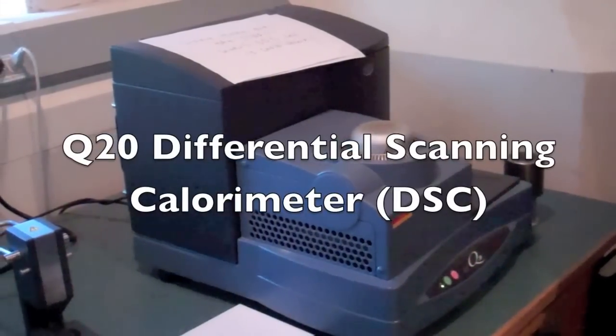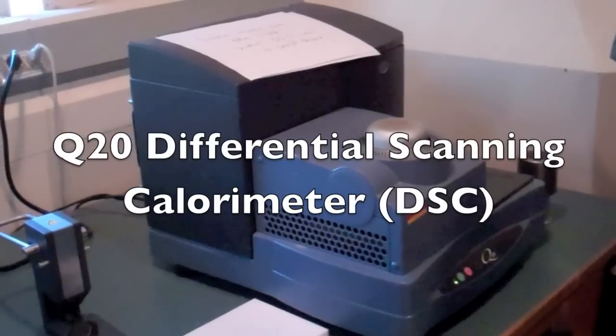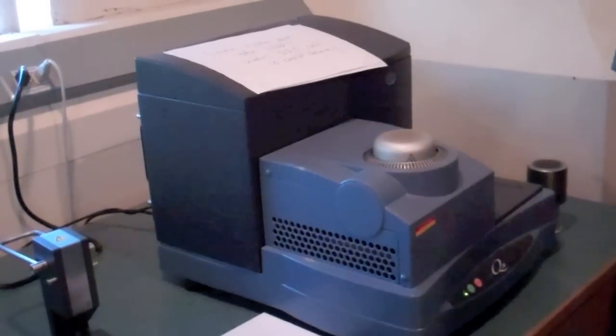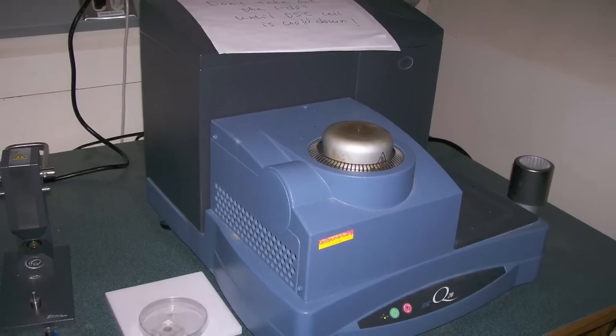The Q20 differential scanning calorimeter is used to measure the heat flow of a sample with respect to temperature. It helps to characterize the thermal behavior and transitions of a sample.